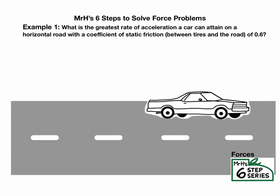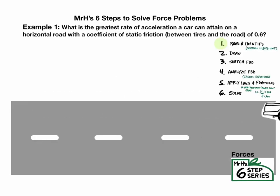Now let's try an example problem. What is the greatest rate of acceleration a car can attain on a horizontal road with a coefficient of static friction of 0.6? Step one would be to identify the question. And you know you're done with step one when you have a symbol with a question mark.